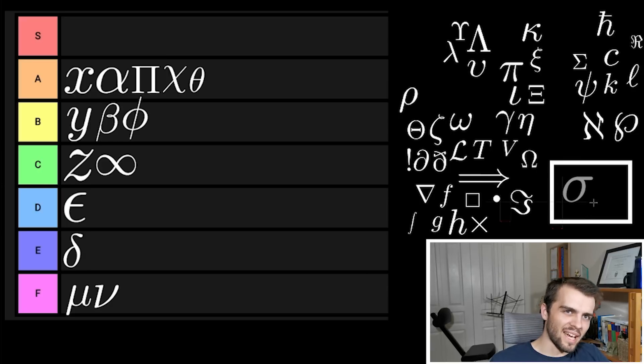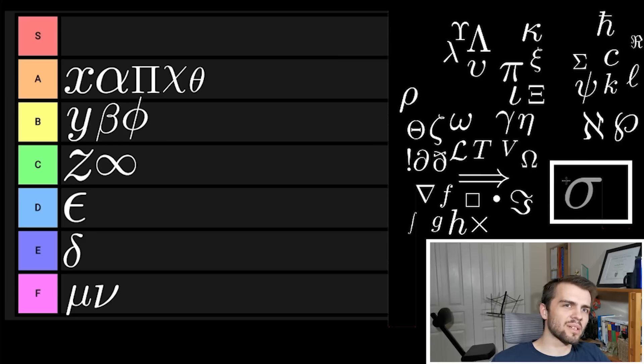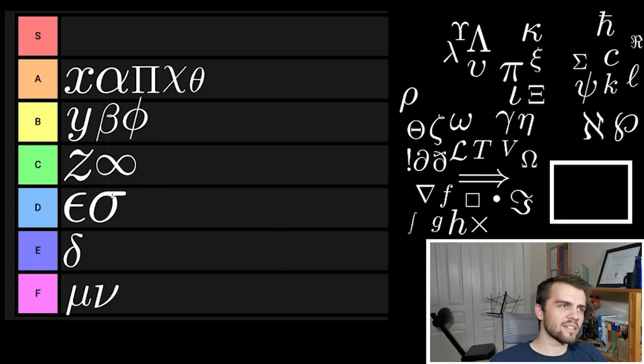Sigma's kind of just bland. I don't know what it is but there's something really bland about this symbol. I don't see anything really fascinating about it. In fact, it shows up sometimes and I always think, well couldn't you use a better symbol? I'm going to put it in D tier for Sigma.